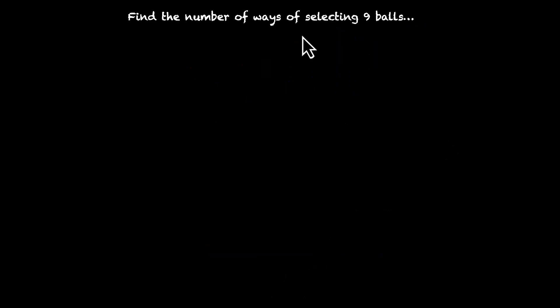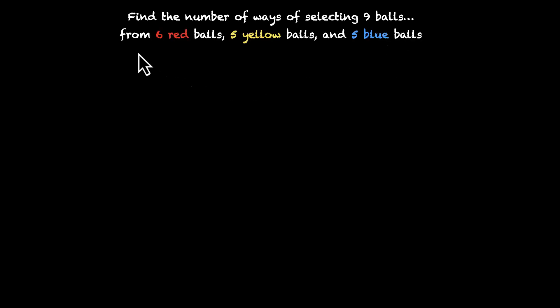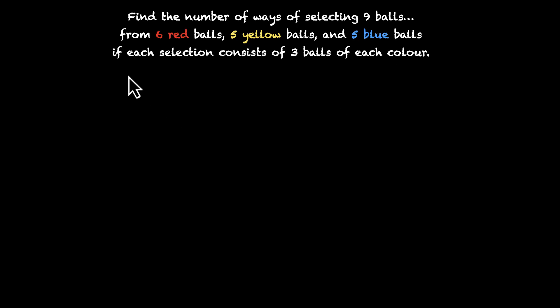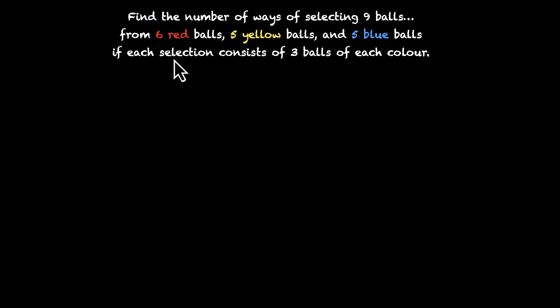Let's try one more. Find the number of ways of selecting nine balls from six red balls, five yellow balls, and five blue balls, if each selection consists of three balls of each color. We can assume that all balls are different.